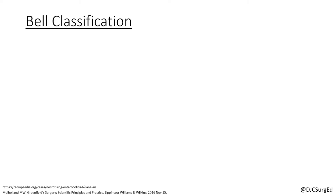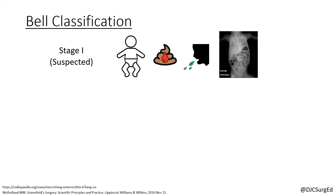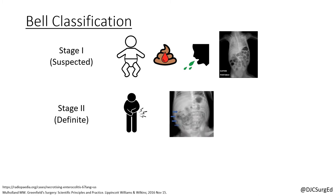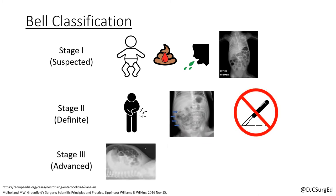The Bell classification system is a three-stage system for characterizing the severity of NEC. Infants with stage 1 disease have features suggestive of NEC. Patients with stage 2 disease have definitive NEC without an indication for surgical intervention. And patients with stage 3 disease have advanced NEC with evidence of bowel necrosis or perforation.